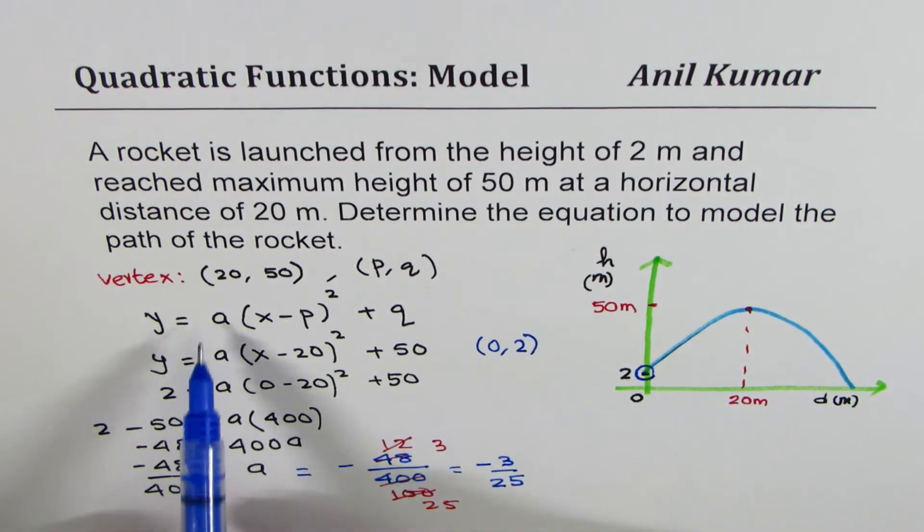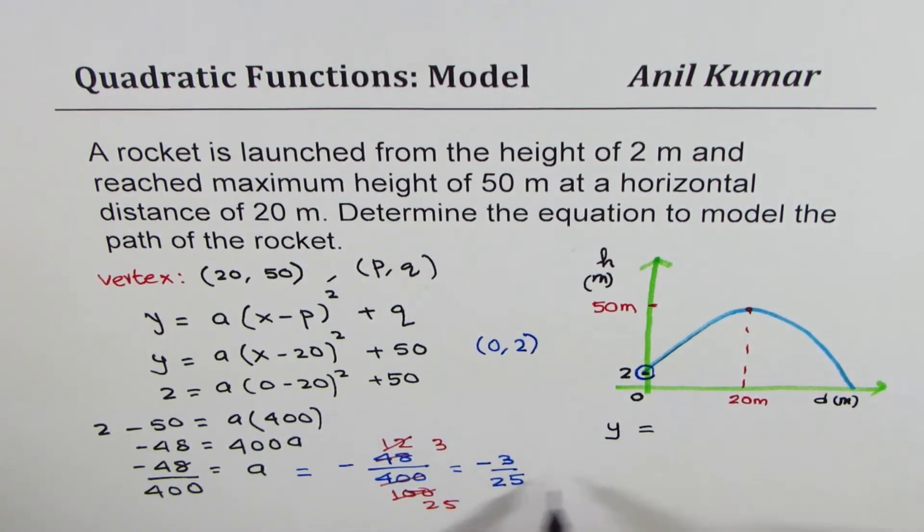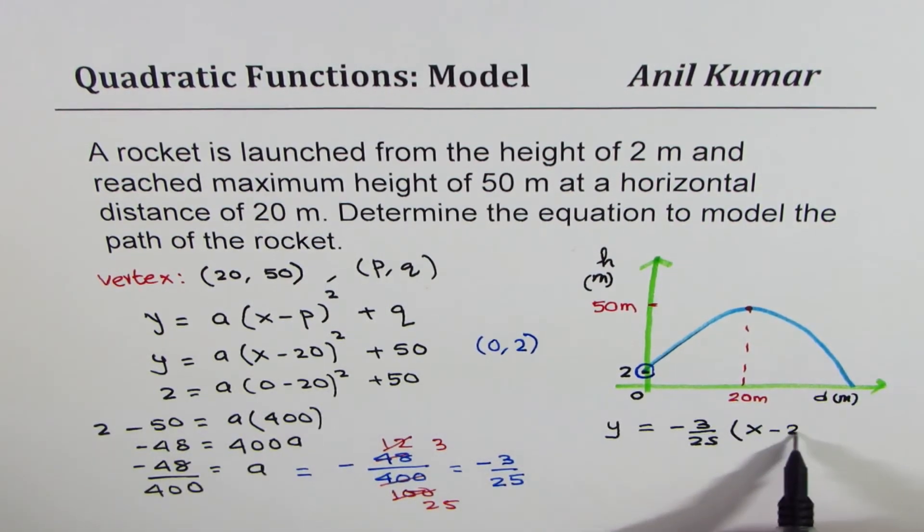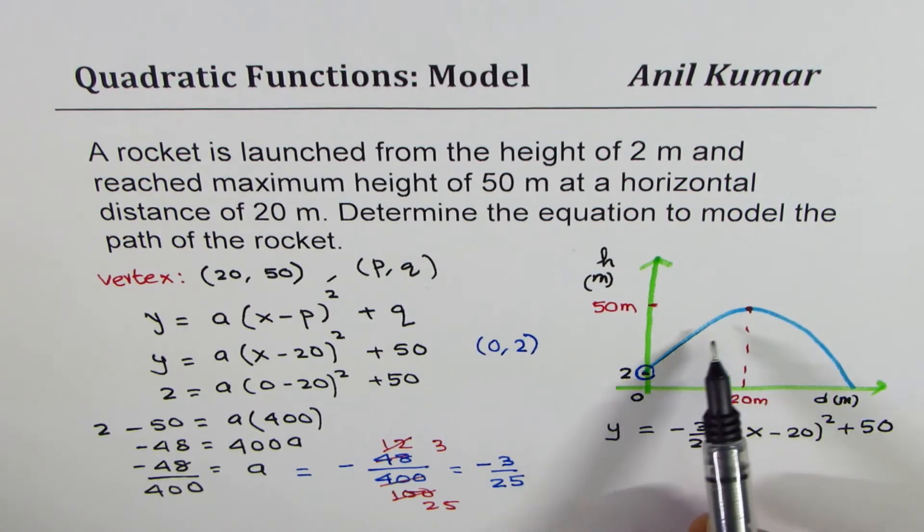So once we have the value of a, we can write down our function. So the function is y equals to minus 3 over 25 times (x minus 20) whole square plus 50. So that becomes a general equation to model the given path.